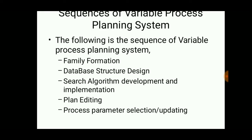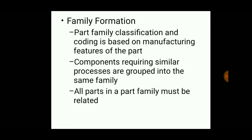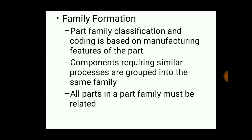The steps of variant process planning are: family formation, database structure design, algorithm development and implementation, plan editing, and process parameter selection. Family formation includes part families and coding based on manufacturing features — for example, if a part consists of four drilled holes and cornered edges, these are the specifications.